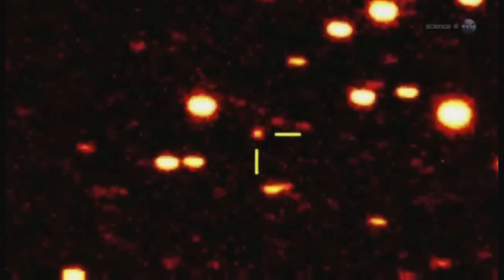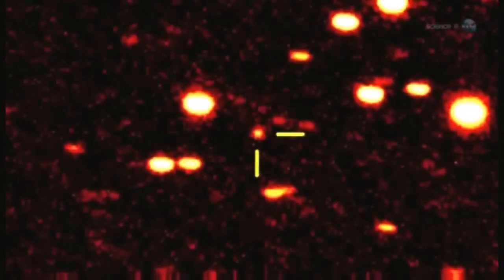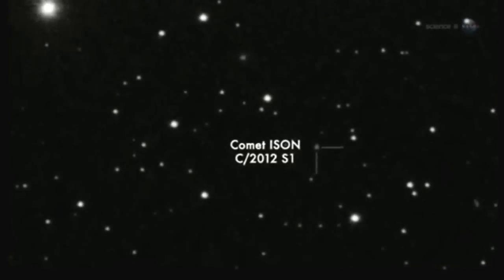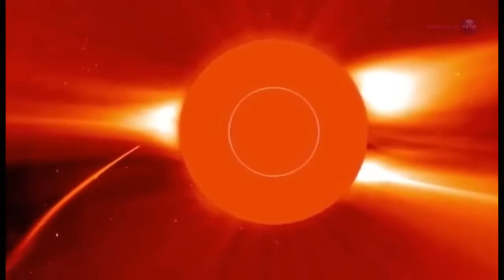Comet Pan-Star should not be confused with another, even better comet coming later this year. In November 2013, comet Ison could shine as brightly as a full moon in broad daylight when it passes through the atmosphere of the Sun.